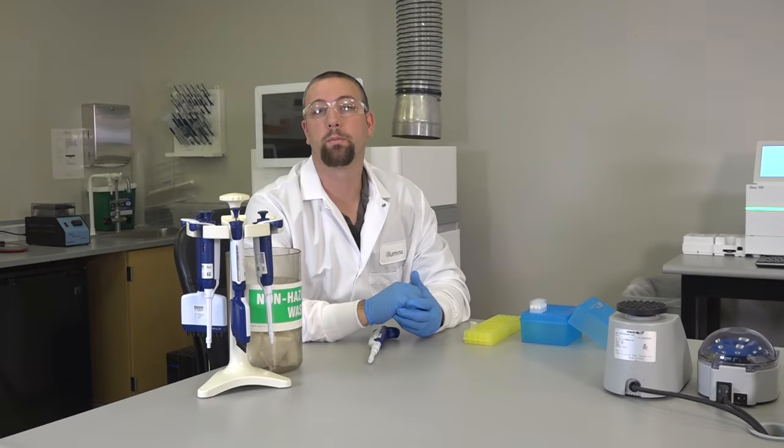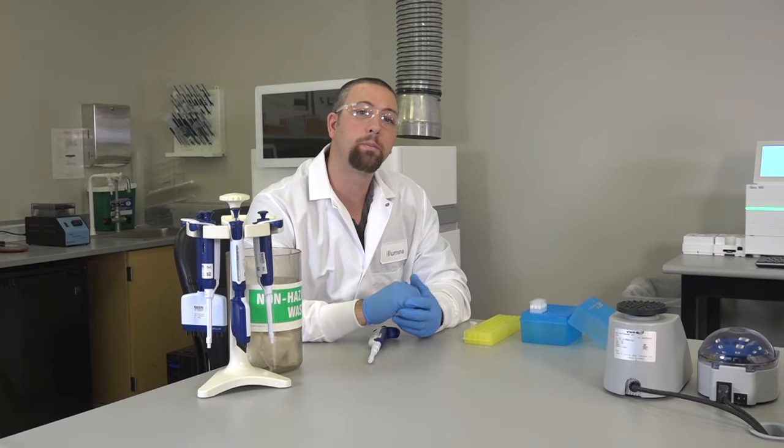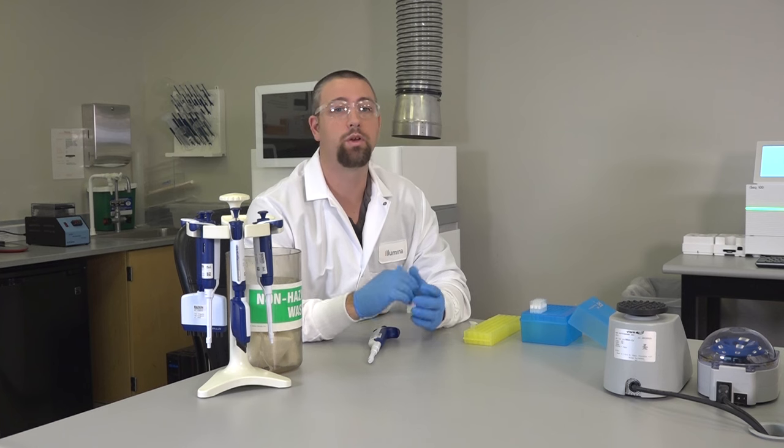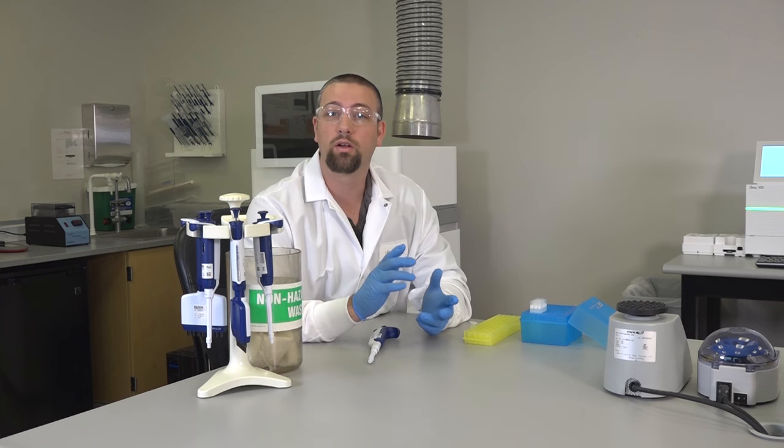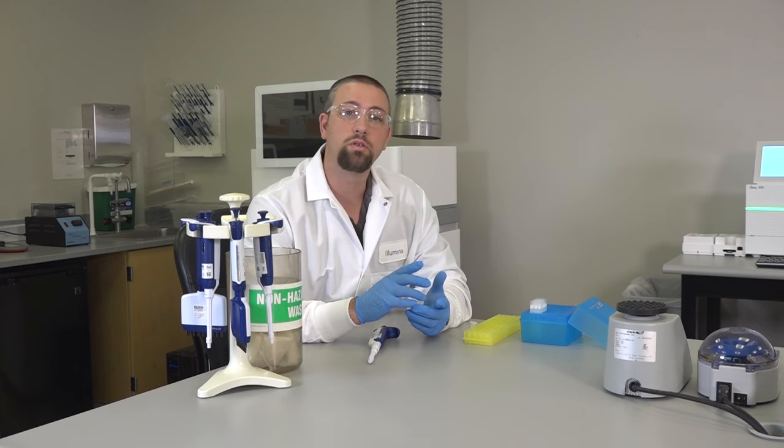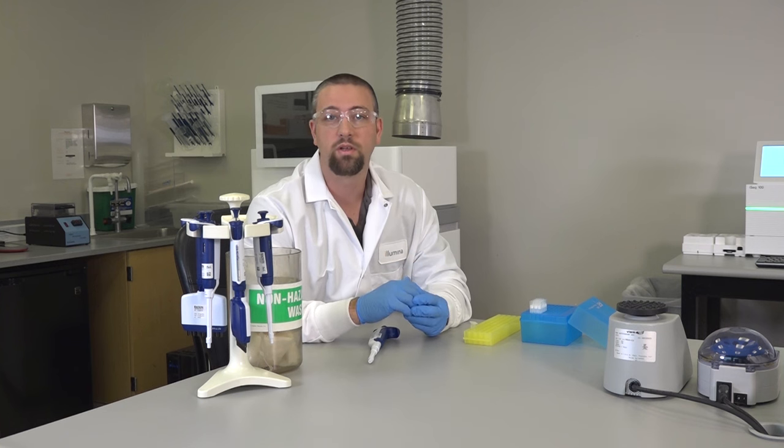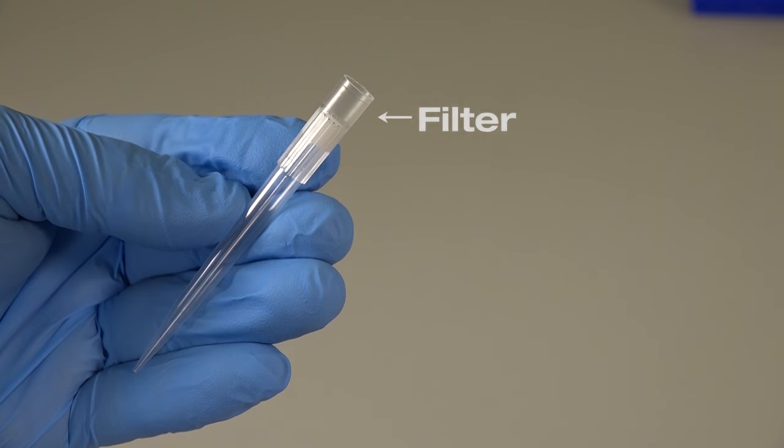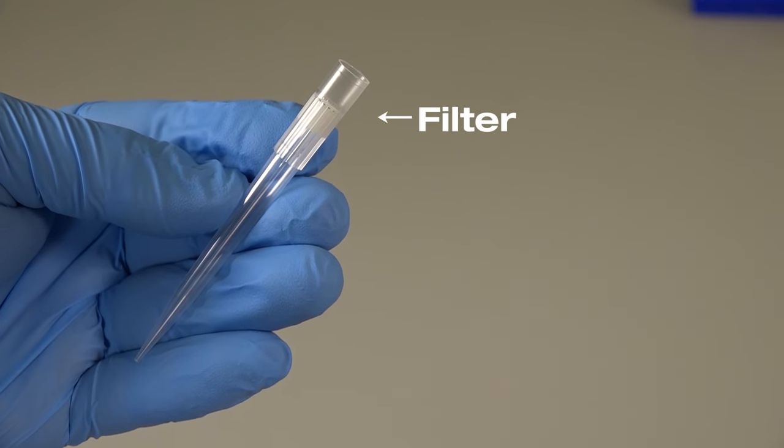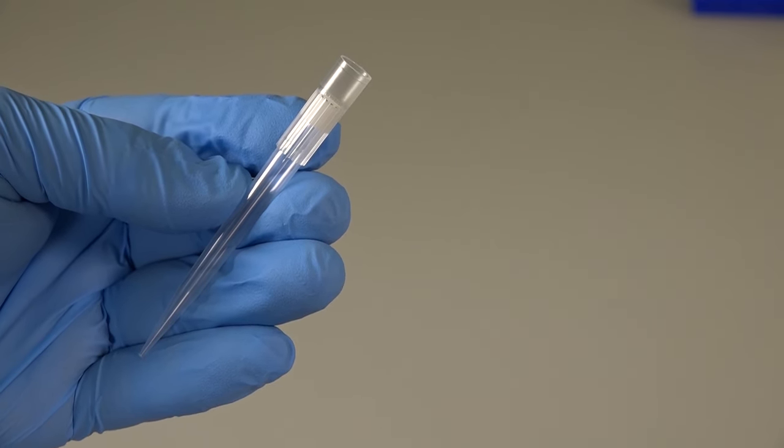Even if you're using perfect pipetting technique, sample-to-sample contamination can still occur due to aerosols. An efficient way to combat aerosol contamination is to use aerosol and liquid-resistant pipet tips, or barrier tips. These types of tips commonly use a self-sealing filter tip to prevent liquids or aerosols from contacting the pipetter.